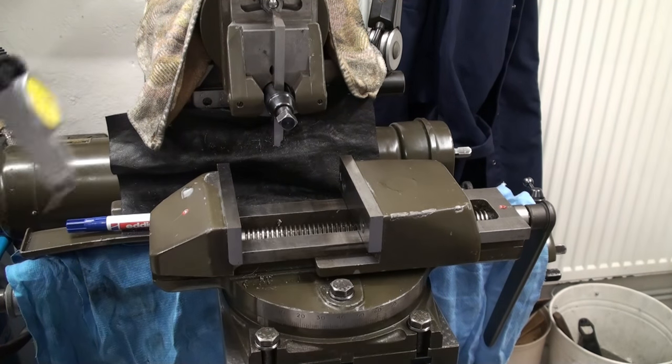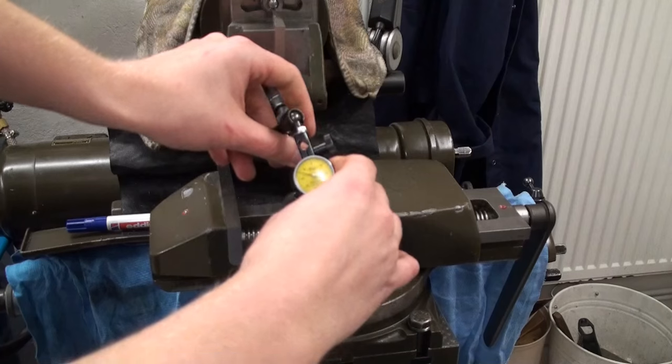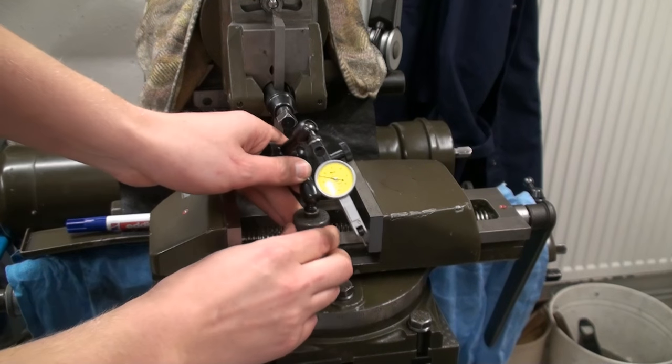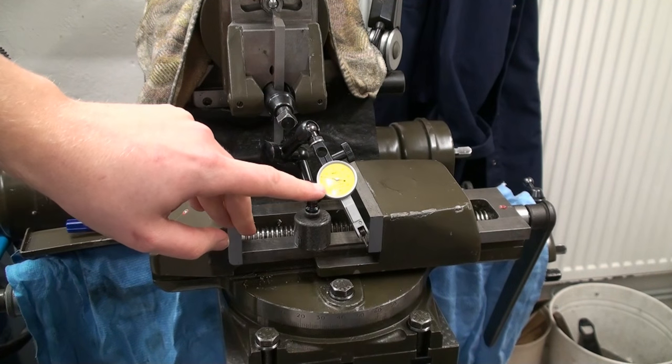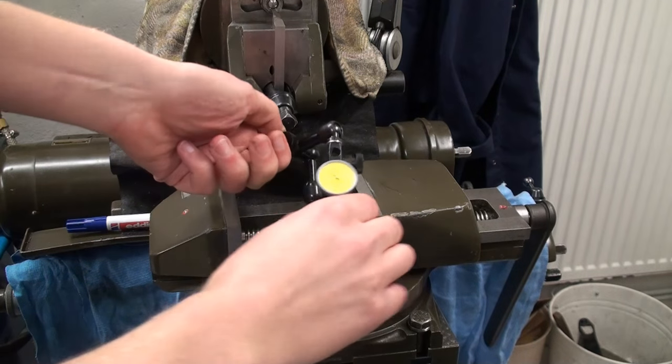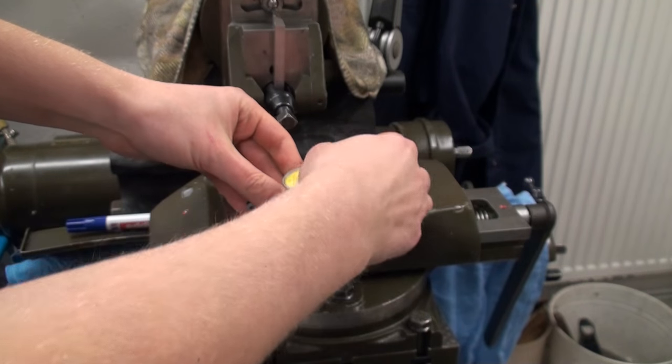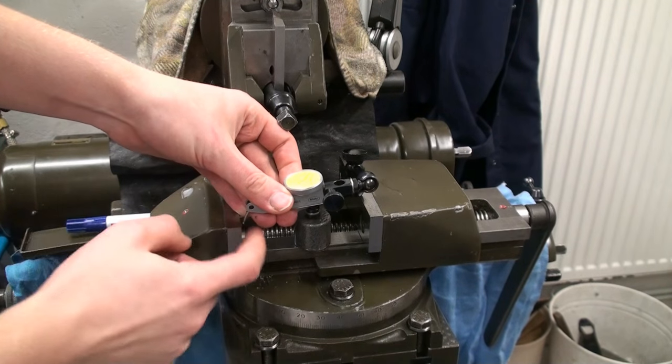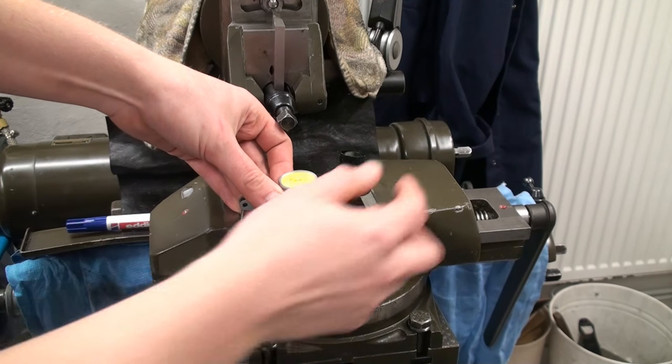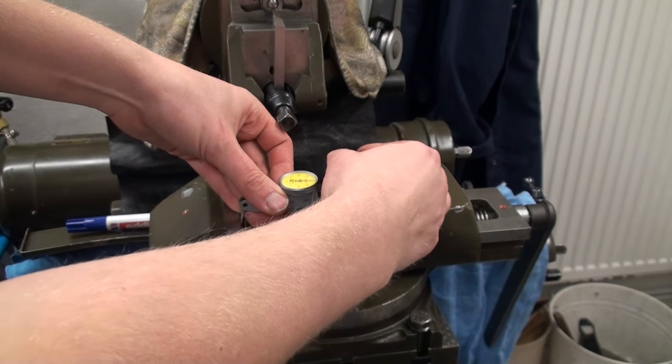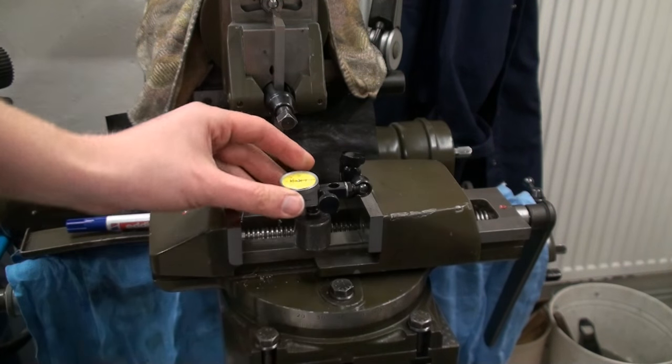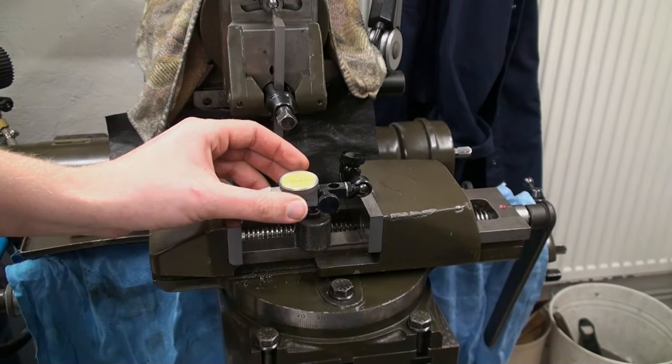We will take this surface as a reference. That means we will set our indicator stand up here, and this is a one hundredth of a millimeter indicator. We will just rest the tip of the indicator up against the fixed jaw and zero out our dial.